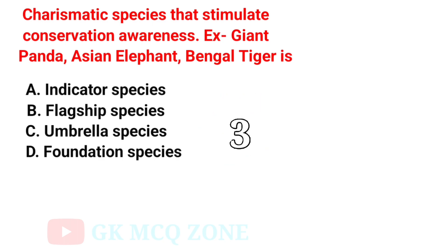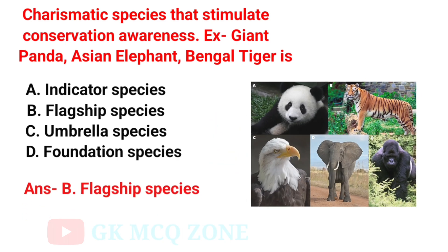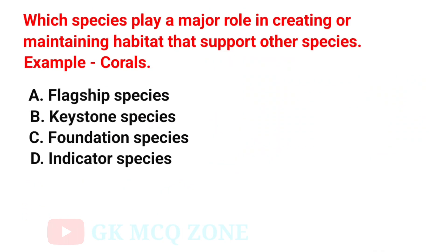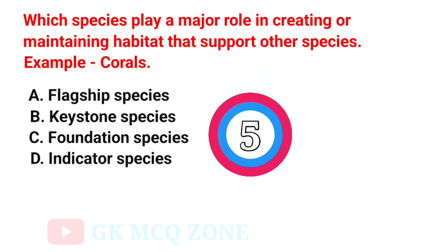Charismatic species that stimulate conservation awareness — for example, giant panda, Asian elephant, and Bengal tiger — are known as what? The answer is Option B: Flagship Species.